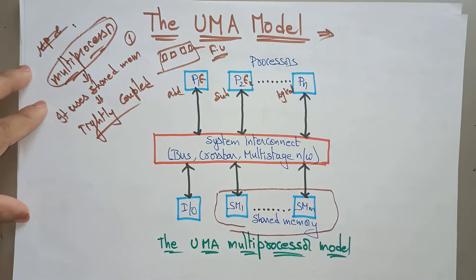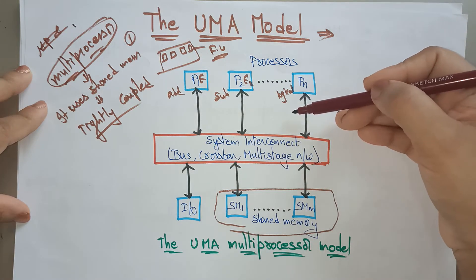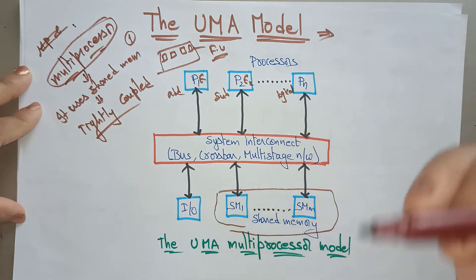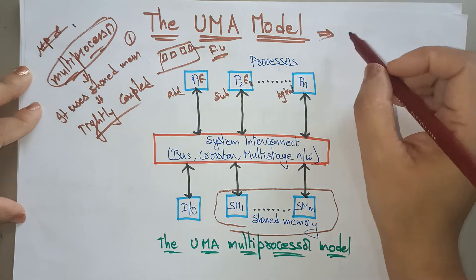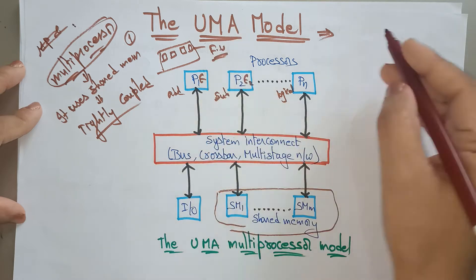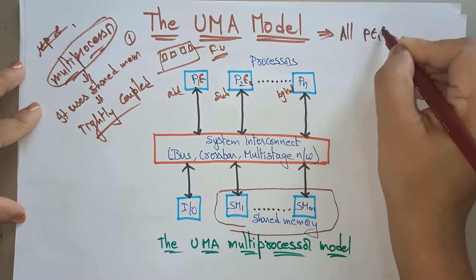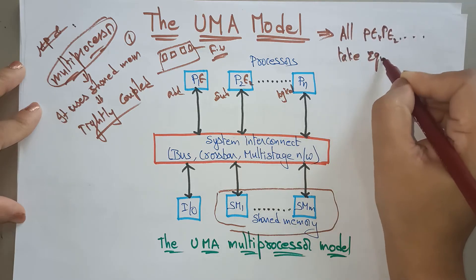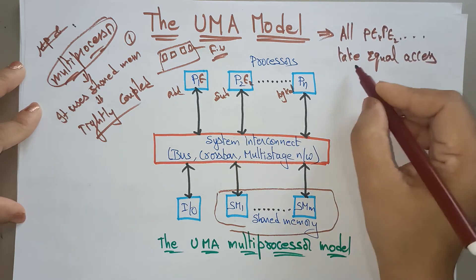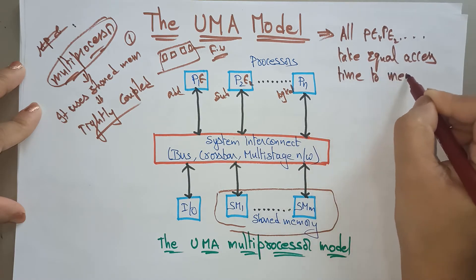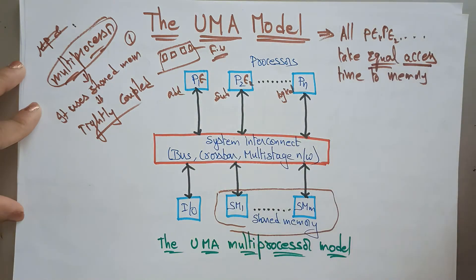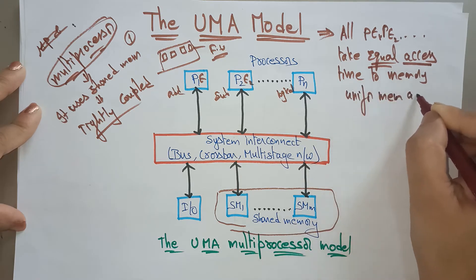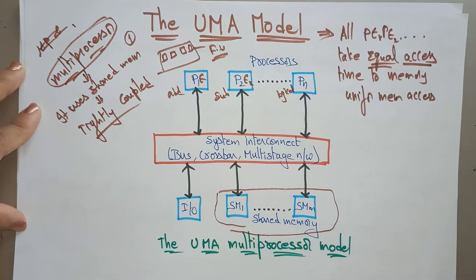All processing elements take equal access time to memory. That's why we call it a Uniform Memory Access model. All processing elements — PE1, PE2, and so on — take equal access time to memory. Whenever we talk about equal access, that means uniform. So that's why we name it Uniform Memory Access: uniformly accessing the memory.